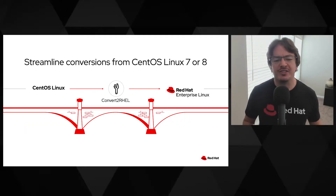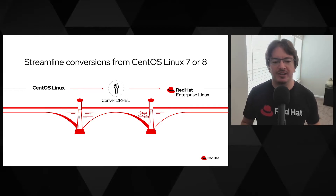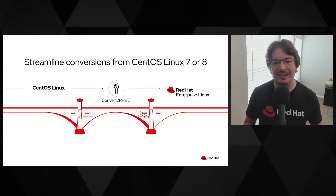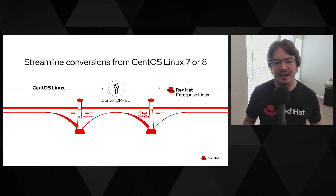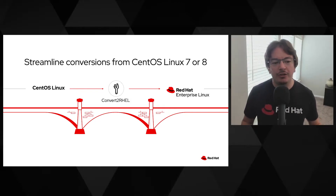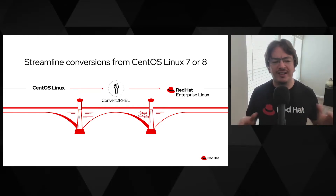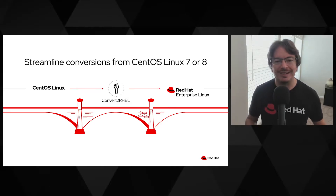How does this process work? Convert to RHEL provides a light-touch process for converting CentOS Linux systems to fully supported Red Hat Enterprise Linux. It will automatically determine the architecture of your system and take inventory of all the installed packages. Once the conversion starts, Convert to RHEL subscribes the system to the required Red Hat package repositories. Then all of the OS-dependent packages are swapped out for Red Hat signed RPMs. Once the conversion is done, all it takes is a reboot. What's more, the Convert to RHEL tool brings your system up to the latest minor release.